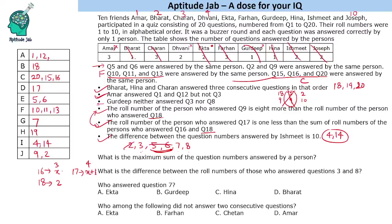Now we have to fill one value each for Amar and Dhvani. Amar answered questions 1 and 12 but not question 3, so Amar answered question 8. That leaves Dhvani to answer question 3.